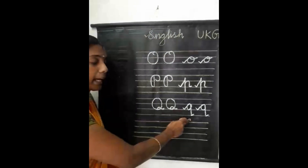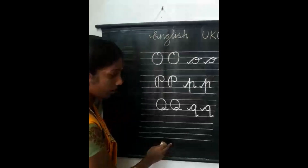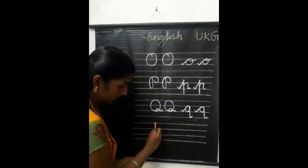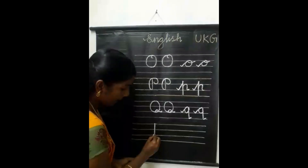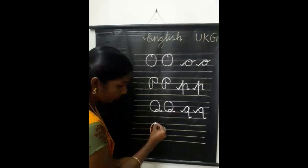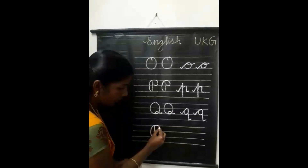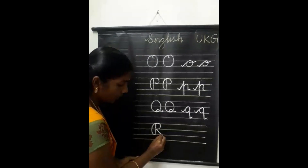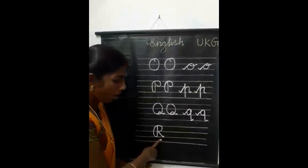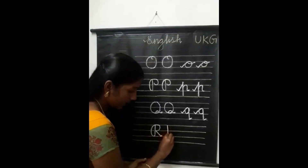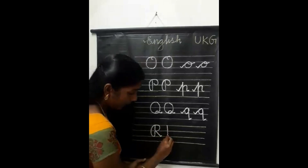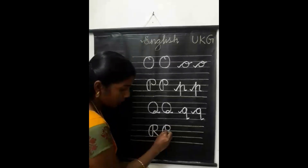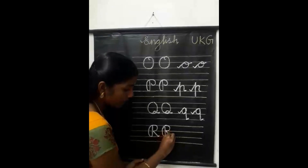What letter will come after Q? Very good — R. Let me see how to write capital letter R. From the fourth line to third line, write a standing line, then from here write a right curve going up, then from the fourth line write a left curve touching the standing line, then from here write a left slant line. Capital letter R.